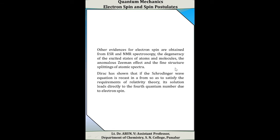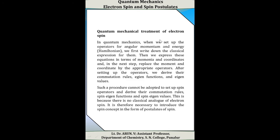There are other evidences for electron spin, obtained from ESR and NMR spectroscopy, the degeneracy of excited states of atoms and molecules, the anomalous Zeeman effect, and the fine structure splitting of atomic spectra. These experimental facts reinforce the electron spin concept. Later, Dirac showed that if the Schrödinger wave equation is recast to satisfy the requirements of relativity theory, its solution leads directly to the fourth quantum number due to electron spin.